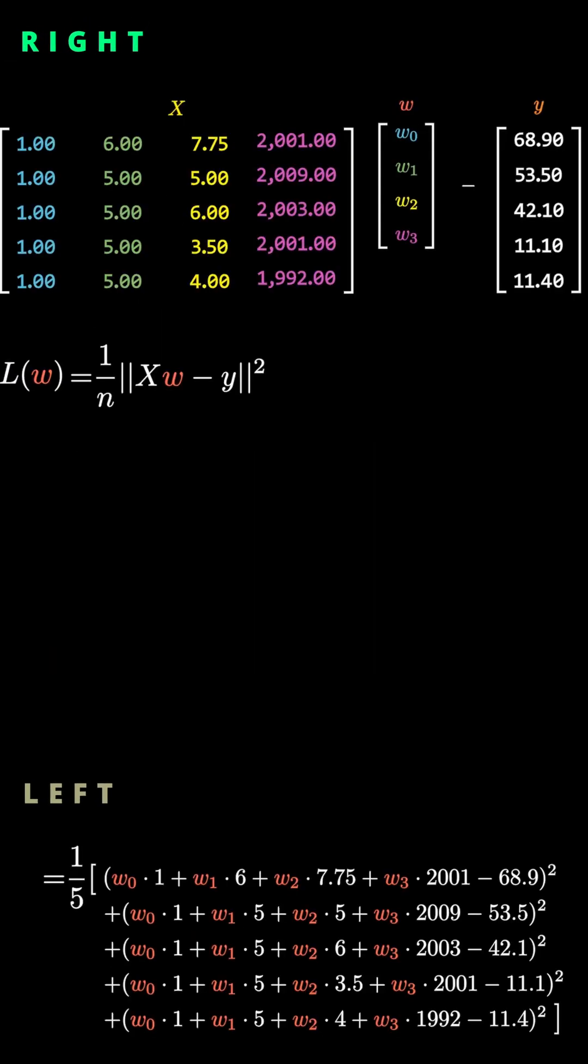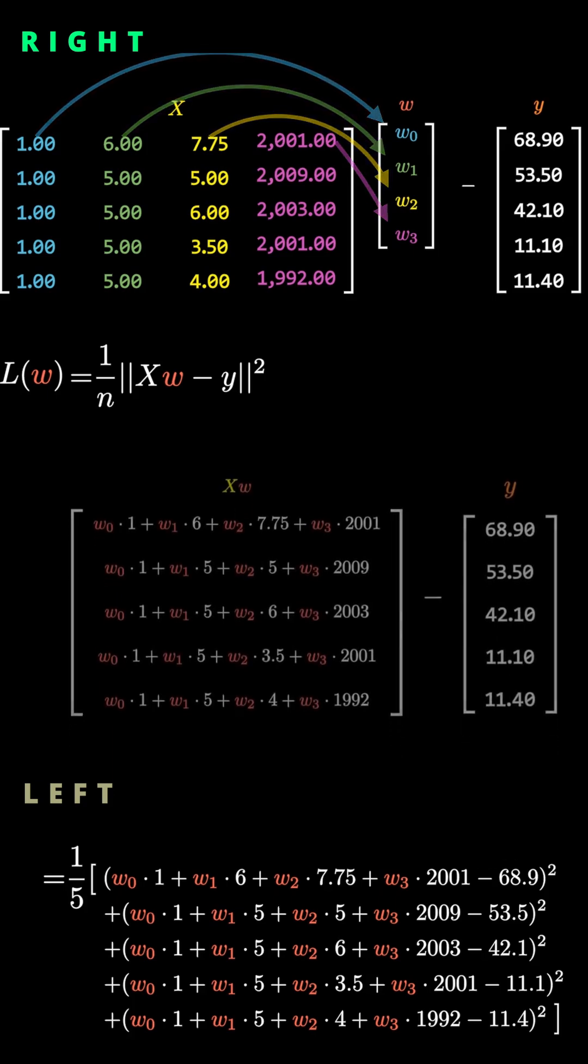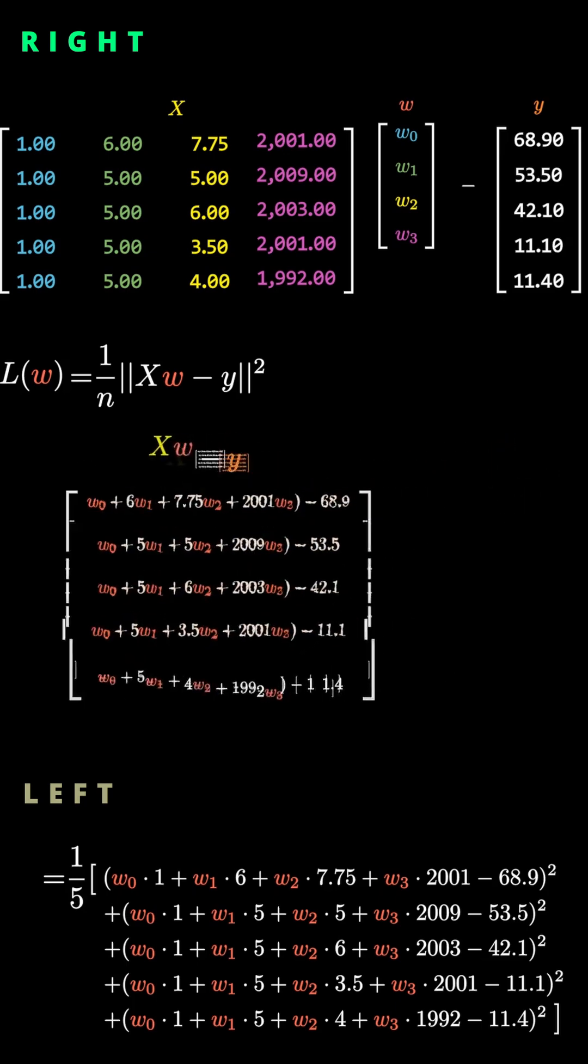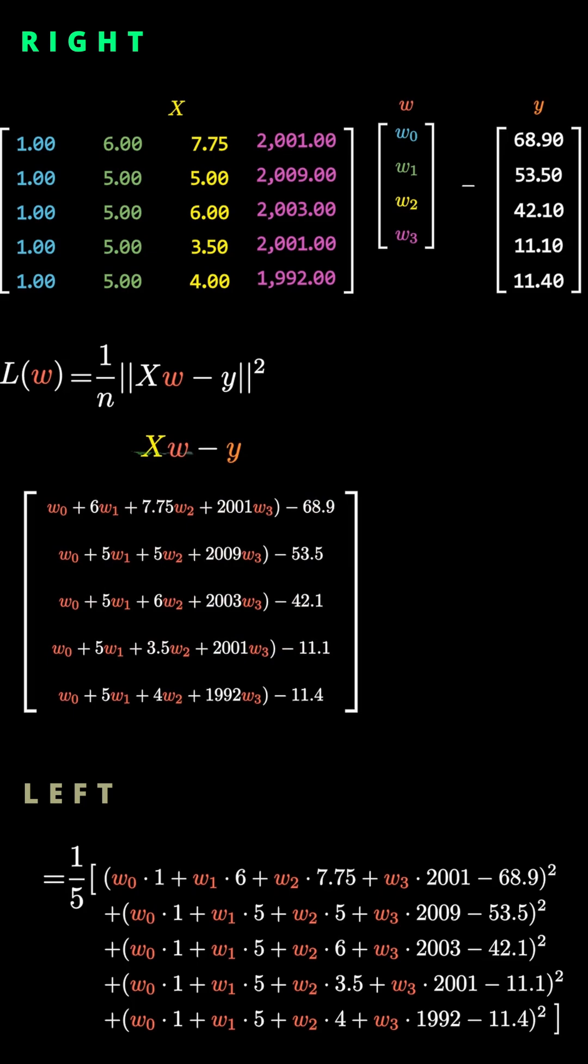Now let's look at the matrix notation on the right. We multiply the X matrix by the W vector. Matrix vector multiplication works like this arrow here, row by row. If we continue that process, the result of XW looks like this. Now we subtract the Y vector. So the expression becomes XW minus Y. Each element of that vector corresponds exactly to the term W transpose X minus Y on the left-hand side.